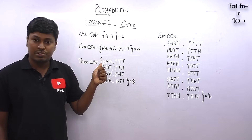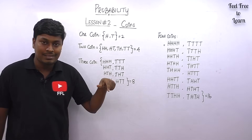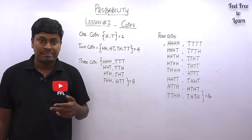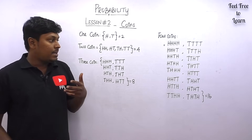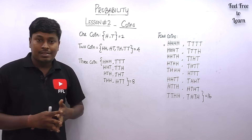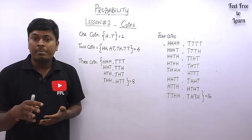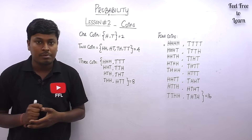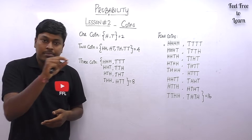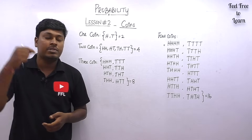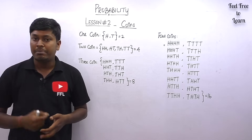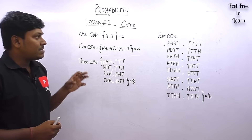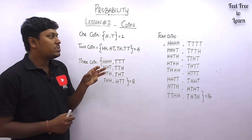The next important lessons cover dice and cards. Remember: every time you solve a probability equation, use the formula — probability equals sum of observations divided by total possibilities.